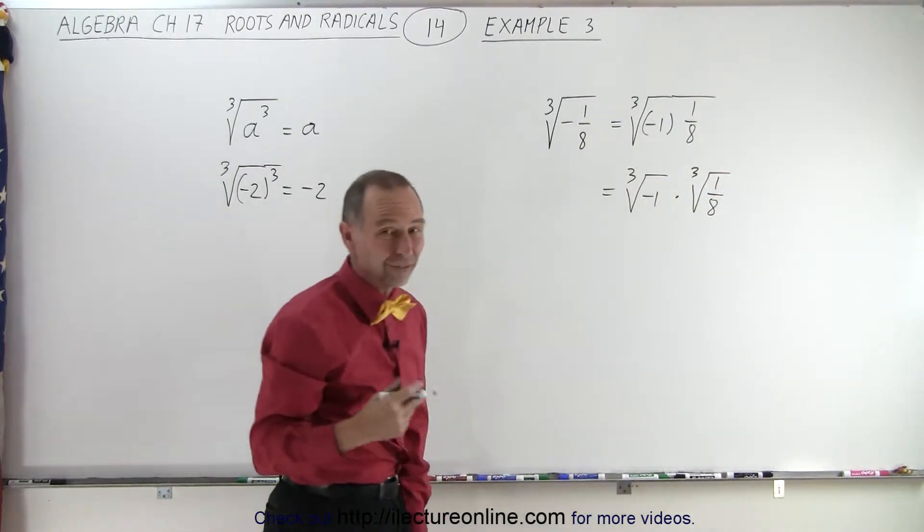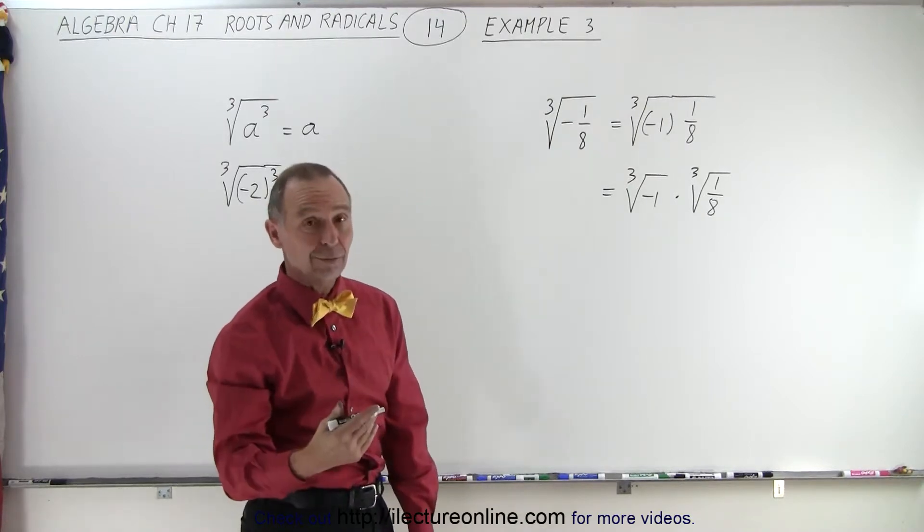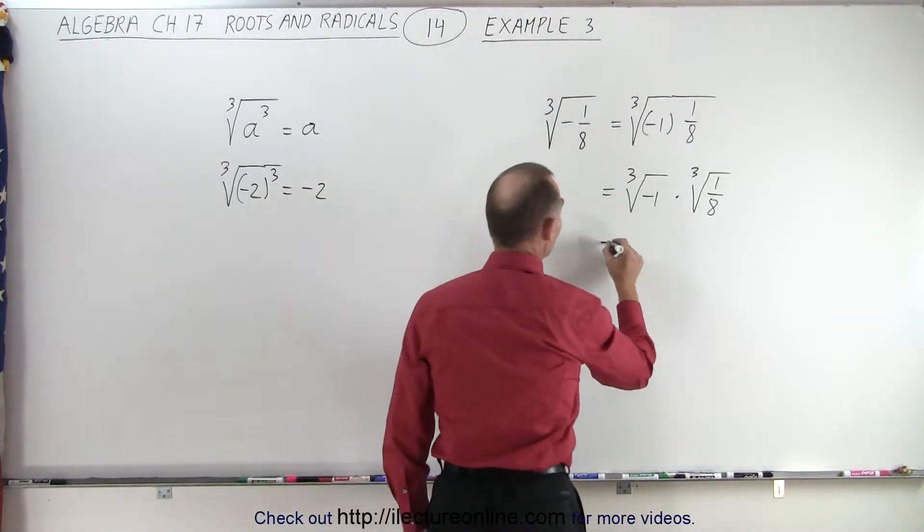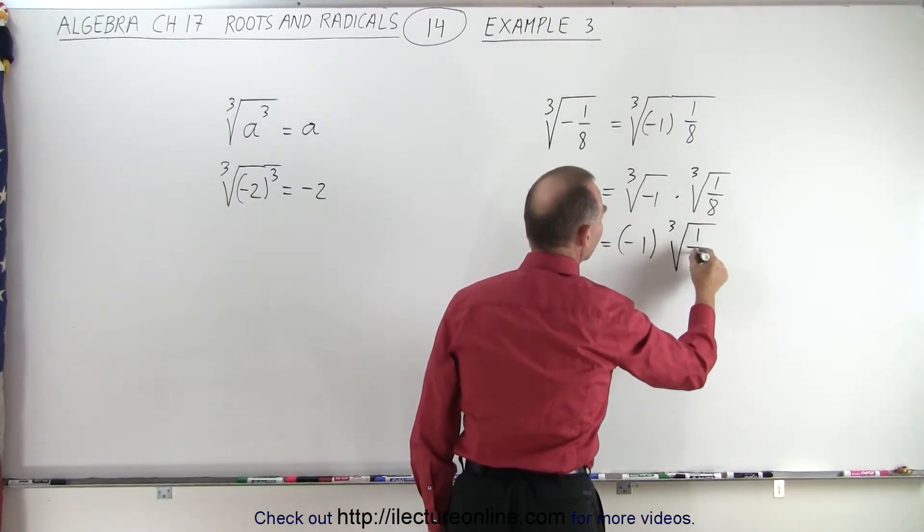And of course, the cube root of negative 1 is negative 1, because negative 1 times negative 1 times negative 1 is negative 1. So this can be written as negative 1 times the cube root of 1 over 8.